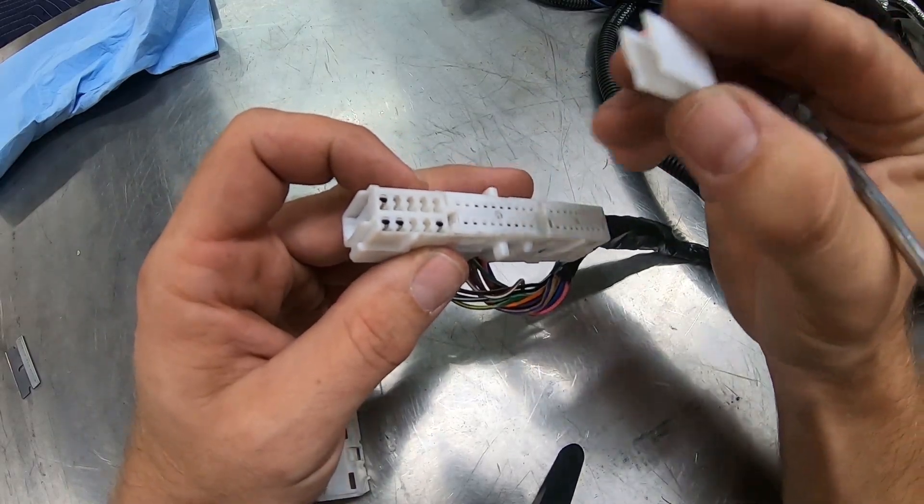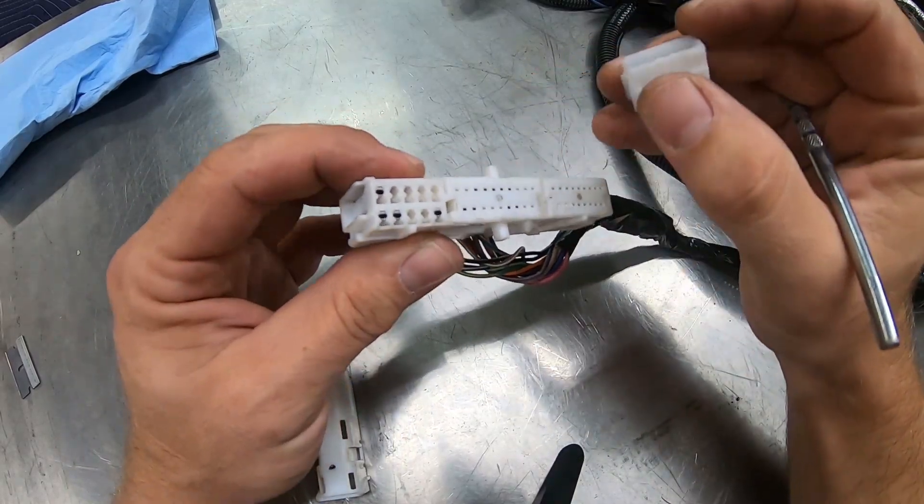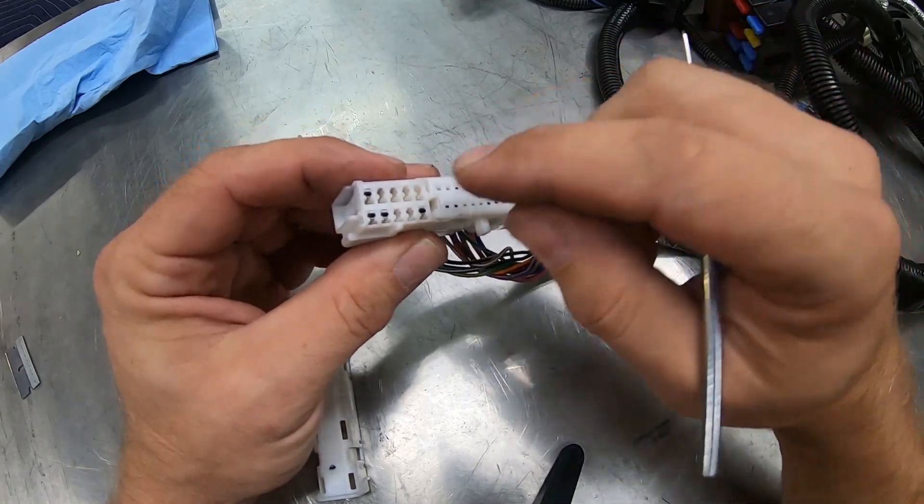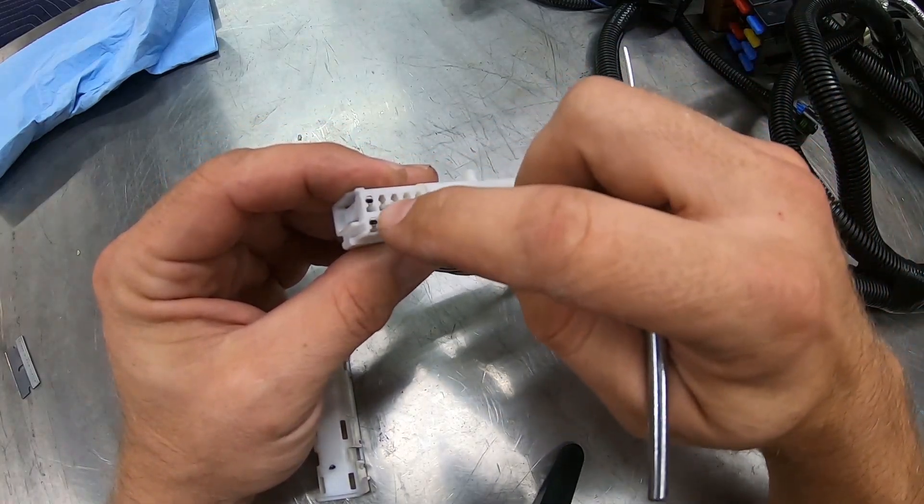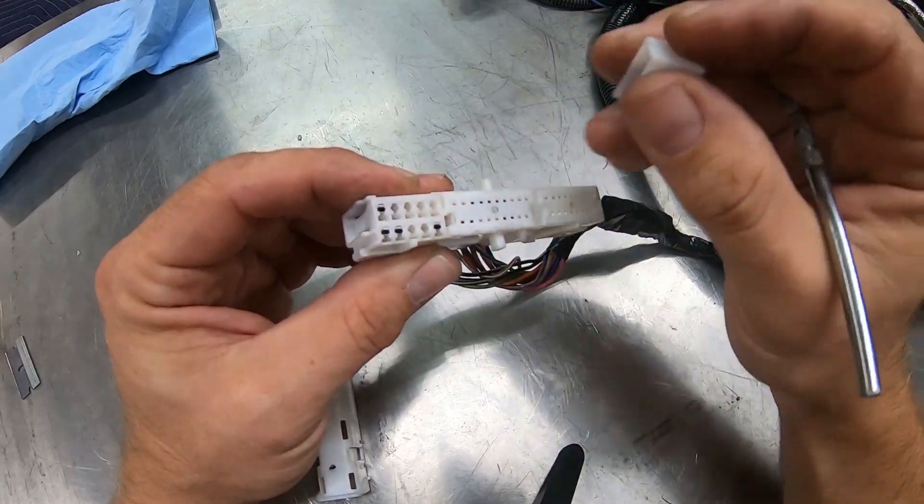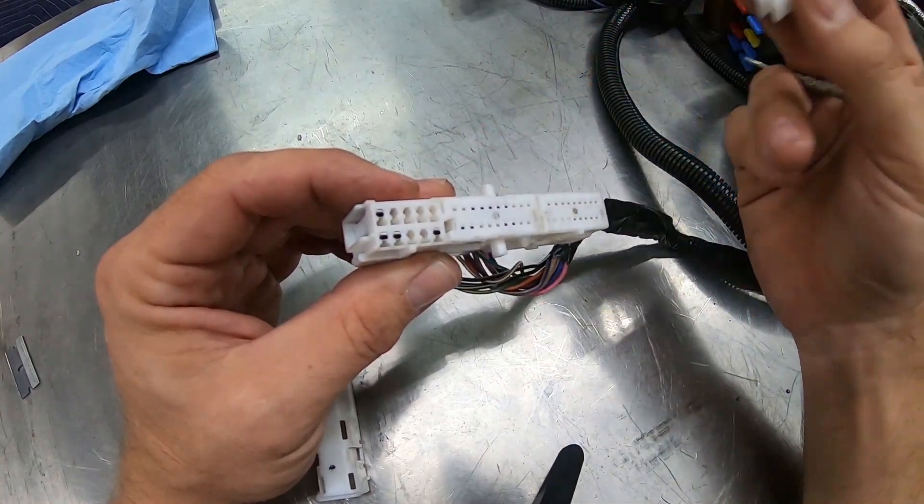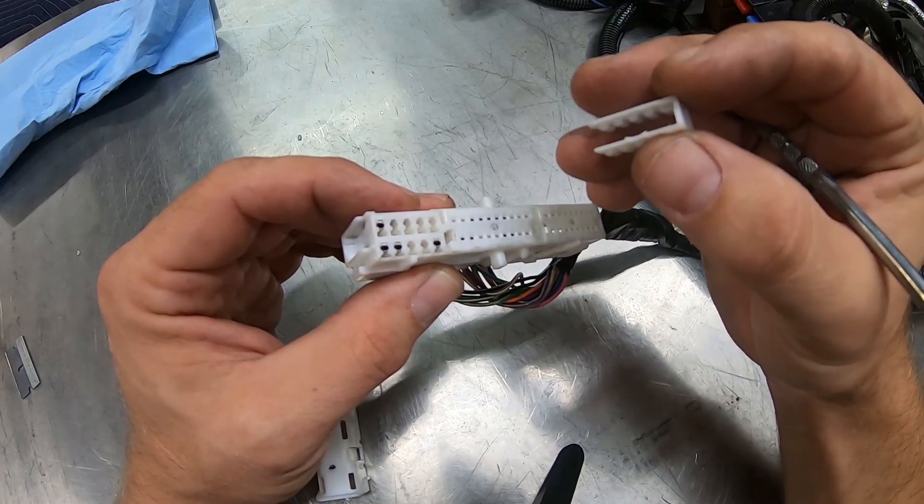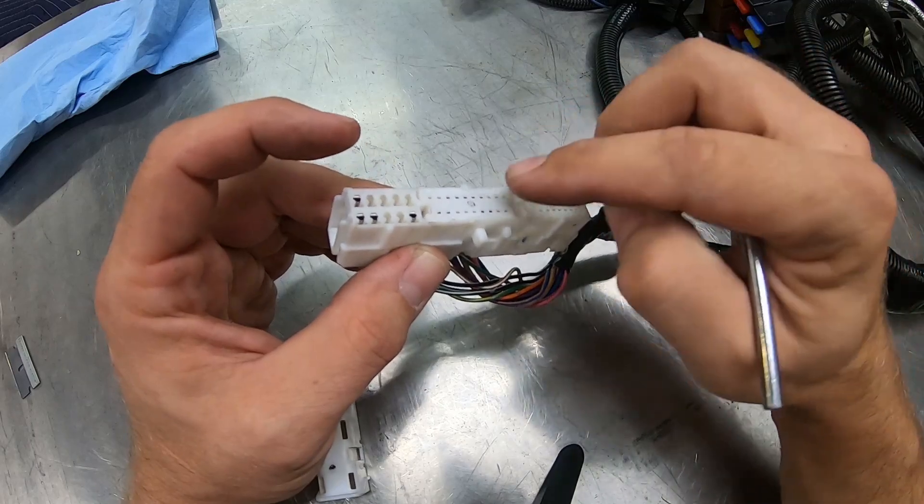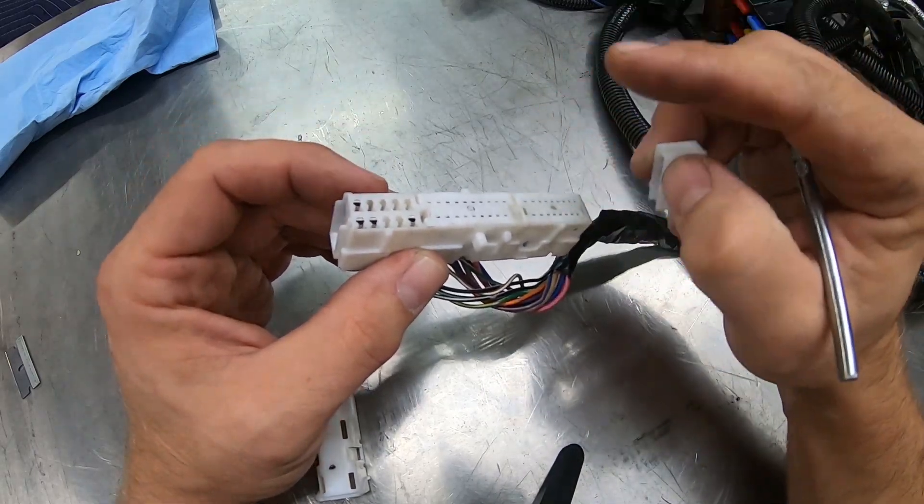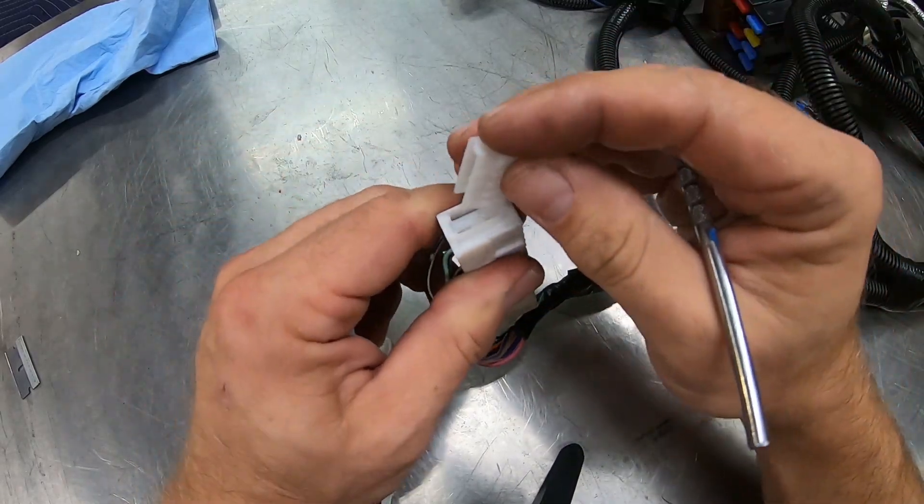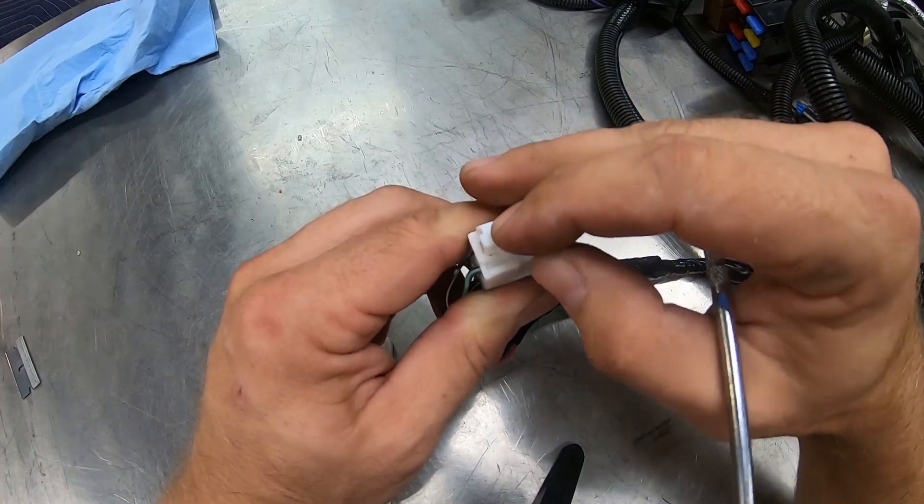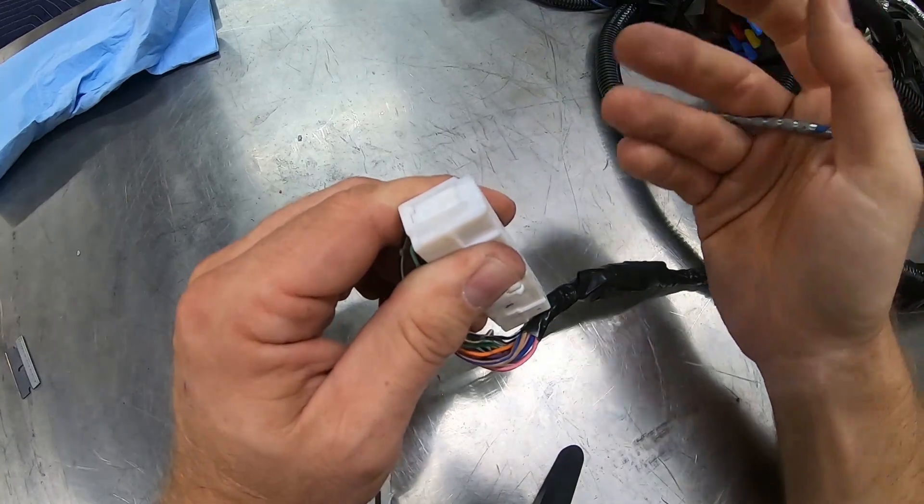Now, on the 350Z G35 harness installation, once the harness is finished being set up for the swap, not all of these terminals are used. Only some of them are used, so you can de-pin out all of the wires that are no longer used after the swap. They work for carrying signals for the factory VQ engine that are not needed with the new 350Z G35 LS swap harness. Once you de-pin, this retainer simply slides back into the top and clicks into place.